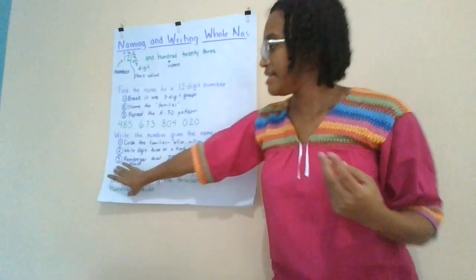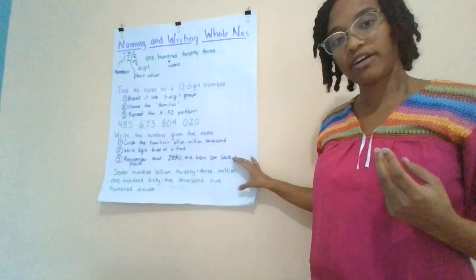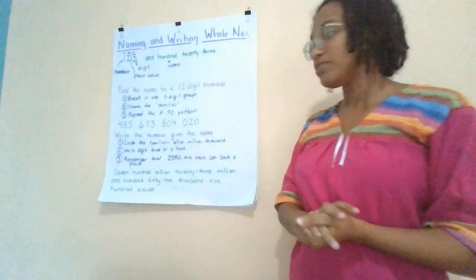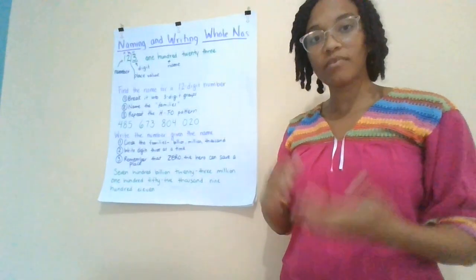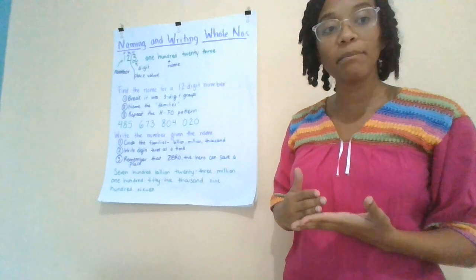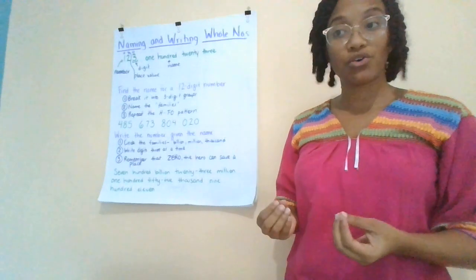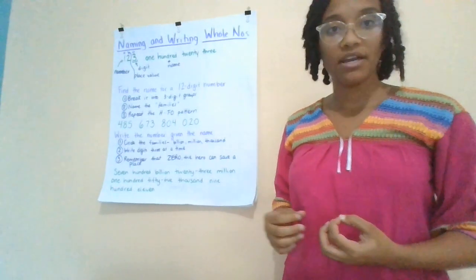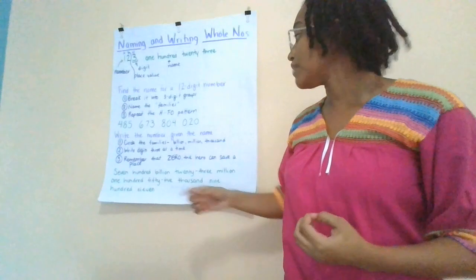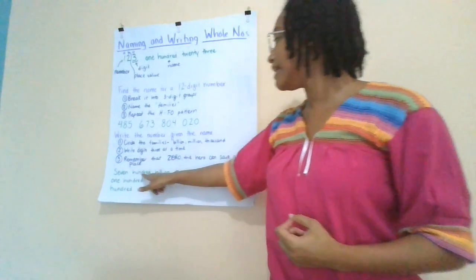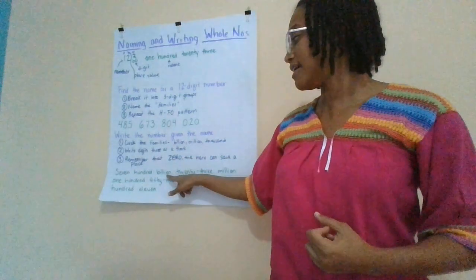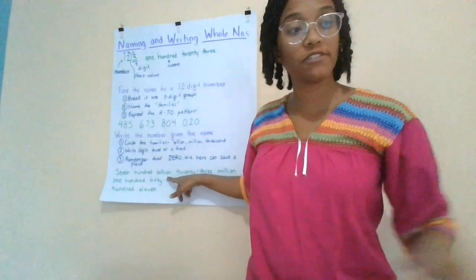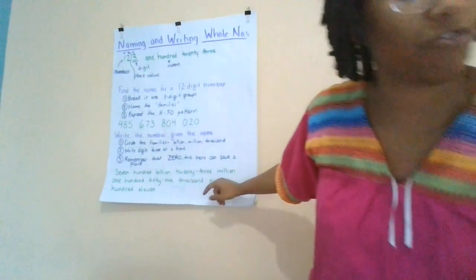The name we're going to practice with is down here in green. Follow these three steps. Our first step is to circle or indicate each of the family names. I'm reading through, and then I find billion — that's the first family name I'm looking for. So on that one, I'm going to put a dot.